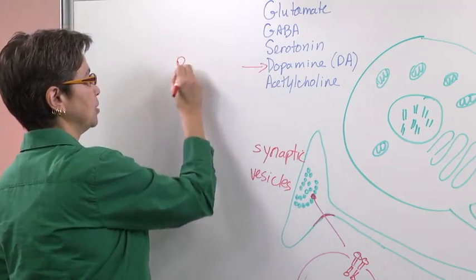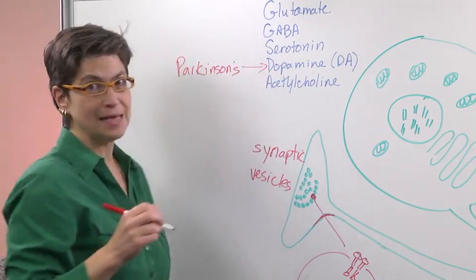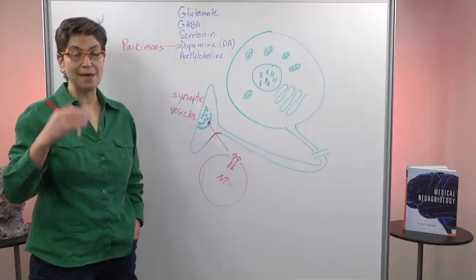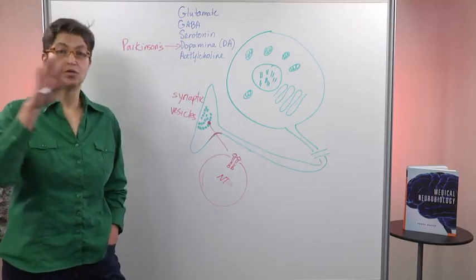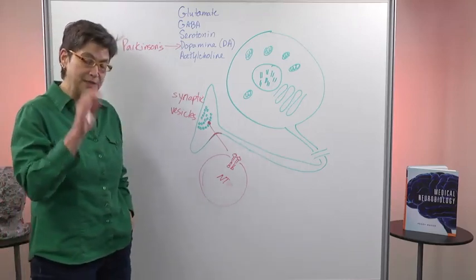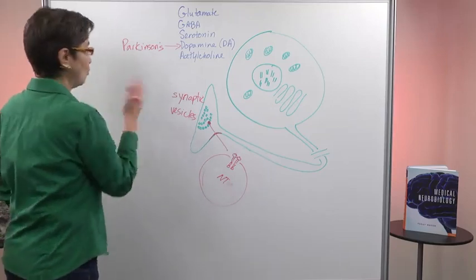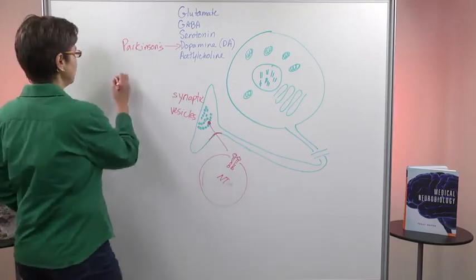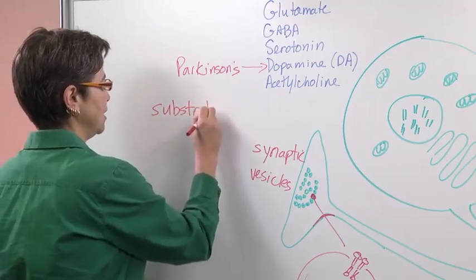...missing in Parkinson's disease. It's not that dopamine isn't made per se or that there's a problem with making it—it's that the cells that make it die. A group of the cells that make dopamine die. So what do you do about that?